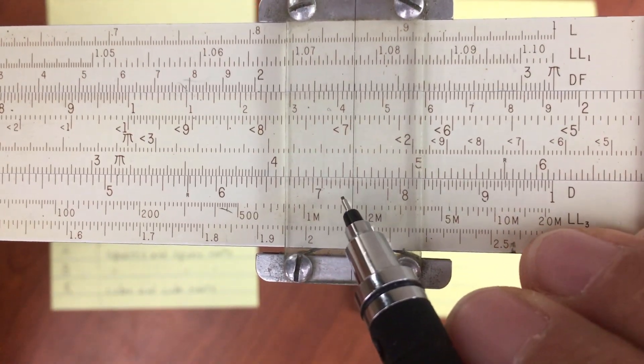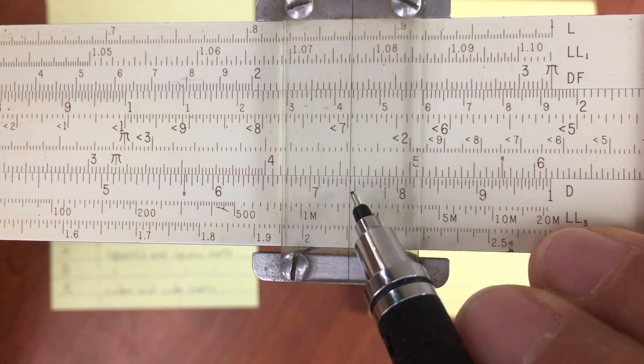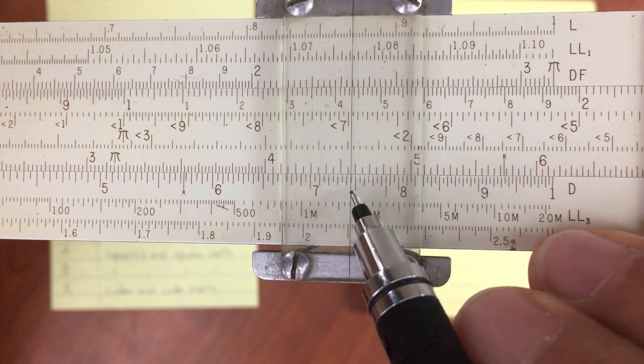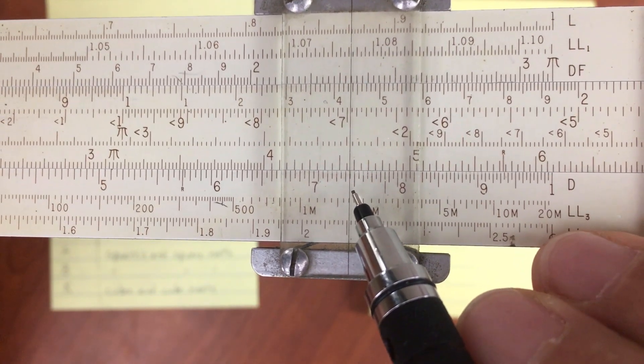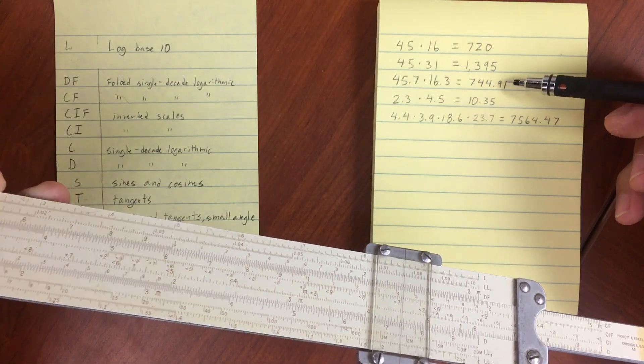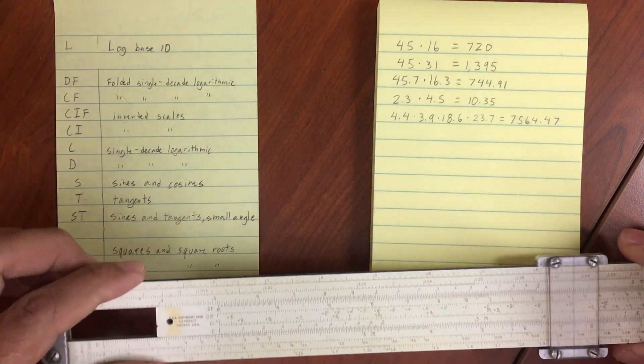And then reading off of our bottom scale, we have 7, 1, 2, 3, 4, and then just 4, 4, 5. So 7.044, let's call it. Maybe 4.45. And if we look here, we've got 744.9. So again, very close in our estimation.